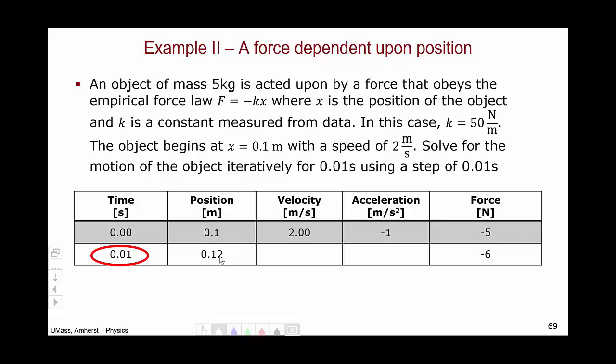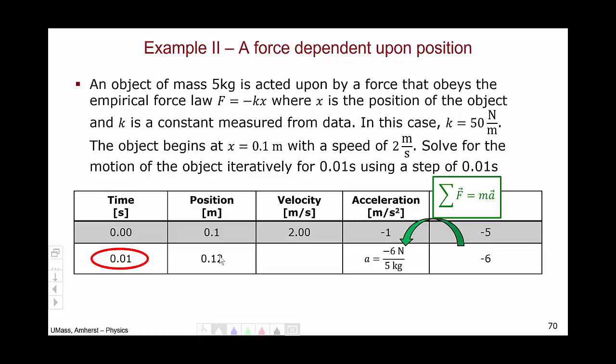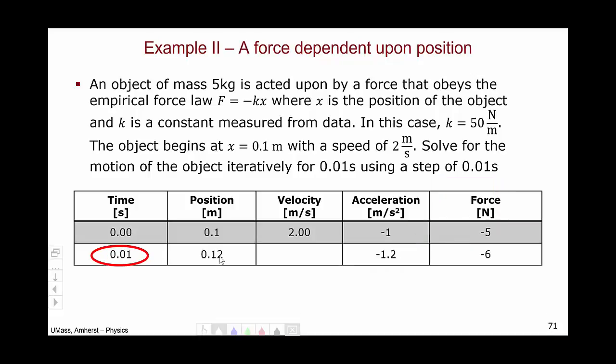Now we can continue in our more usual way of using f equals ma to solve for the acceleration. Minus 6 newtons divided by 5 kilograms will give us an acceleration of minus 1.2 meters per second squared.